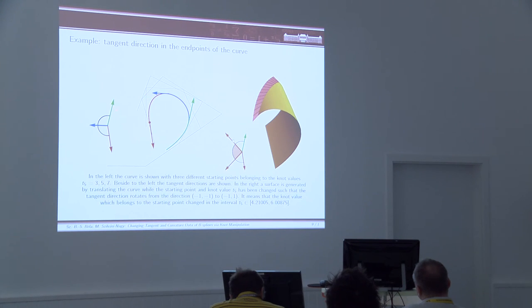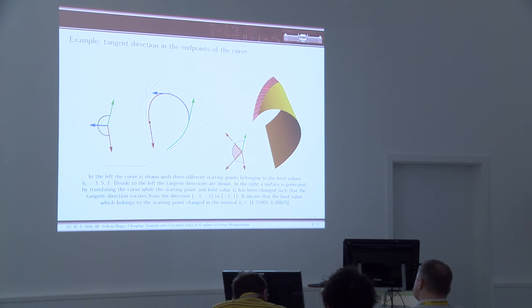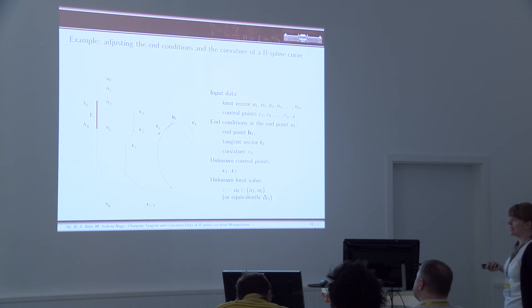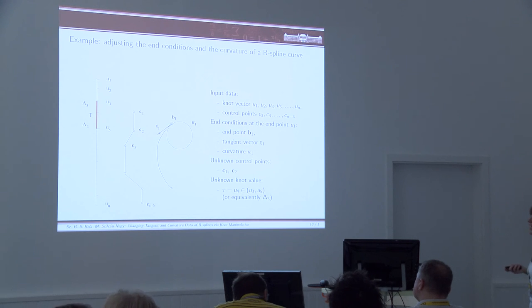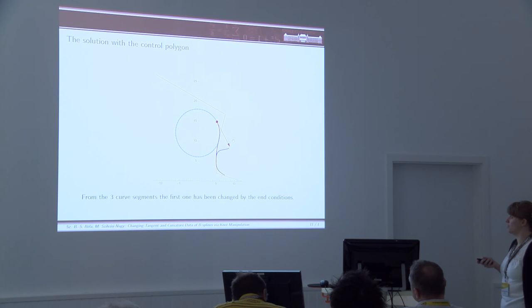If we extend it, we can vary the tangent — for example, between the green and red positions — arbitrarily as we like at the endpoint of the curve. Therefore, we can generate surfaces with a certain tangent band at the edge, varying between two given vectors. We can also extend this method to set not only the tangent condition but also the endpoint of the curve and the curvature data at the endpoint — getting a prescribed osculating circle of the curve.